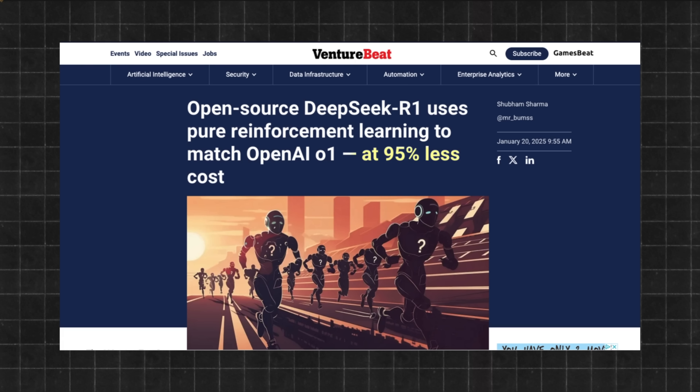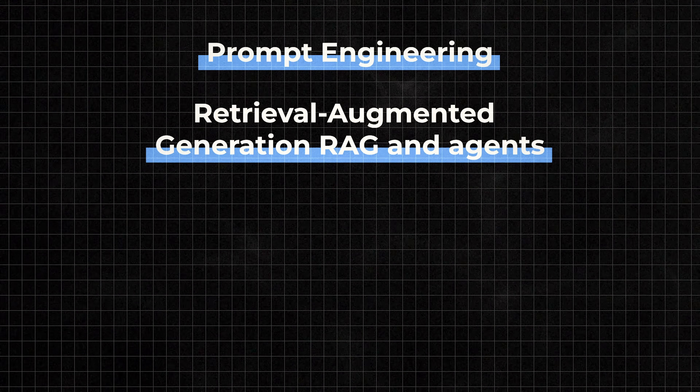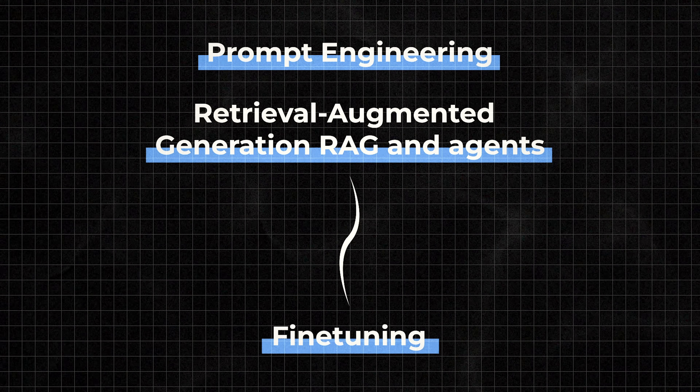Another interesting section discusses scaling laws — the idea that better models require more data, more computing power, and higher costs. However, as we've seen with models like DeepSeek R1 that perform well while requiring less compute and fewer parameters, we might need to rethink this assumption altogether. The rest of the book discusses different techniques to adapt foundation models to specific use cases, from prompt engineering, retrieval augmented generation (RAG), and AI agents to fine-tuning and the whole application architecture to ensure safety, efficiency, data privacy, and protection against potential misuse.